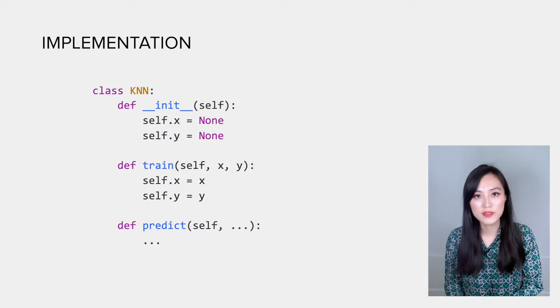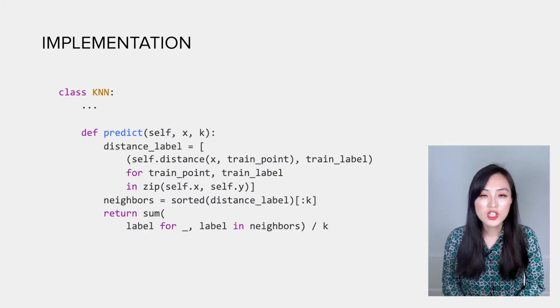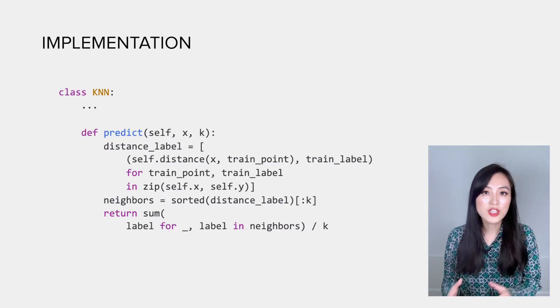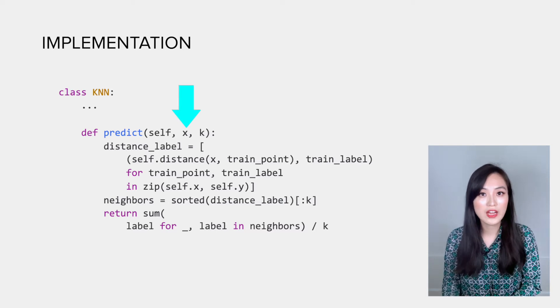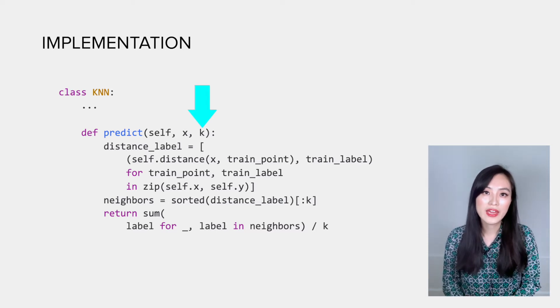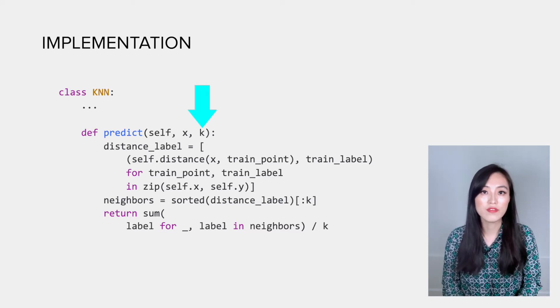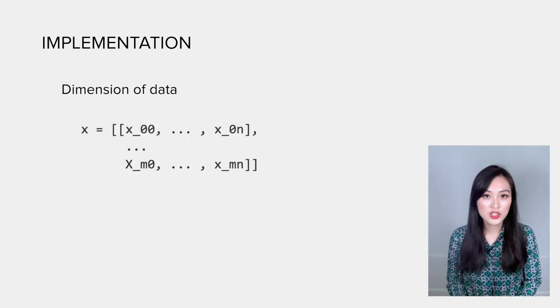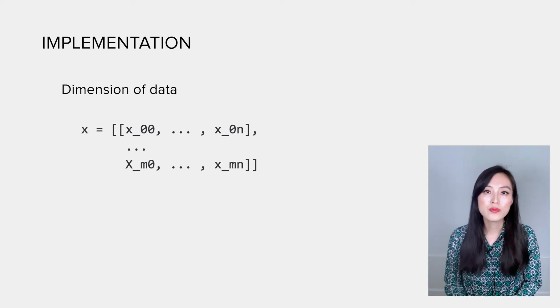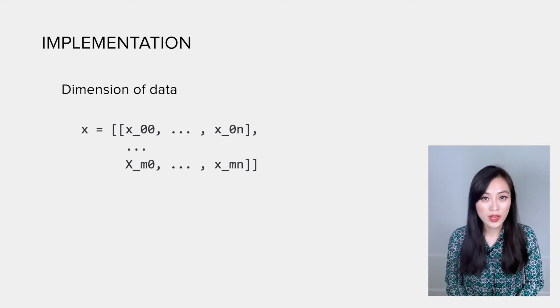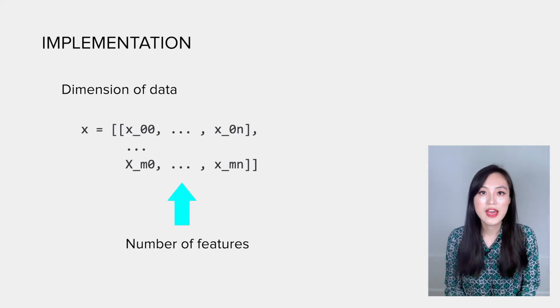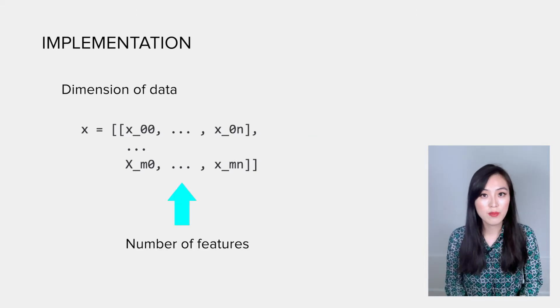Moving forward to the predict function, this is the core of the algorithm. For the function input, we have a new data point that we want to predict values for, and we have k to define the number of neighbors to query. Here I also want to mention the dimension of the data. We'll assume x is a two-dimensional array with the first dimension being the number of data points and the second dimension is the number of features.